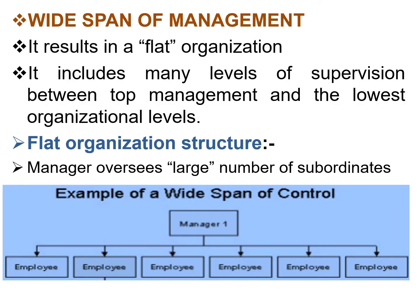The next type is wide span of management. Wide span of management results in a flat organization structure. There are few levels of management, and workers directly report to top management. In this type of span, there is an absence of middle-level management. For example, a manager who manages the activities of six employees, with direct supervision of employees.